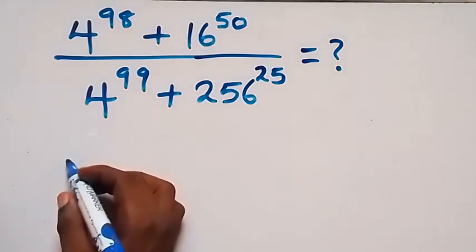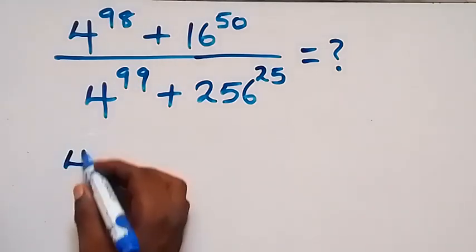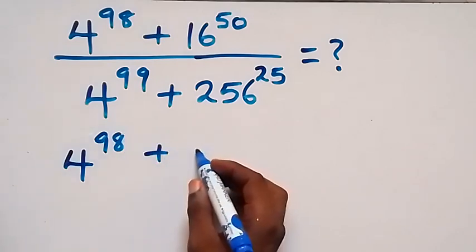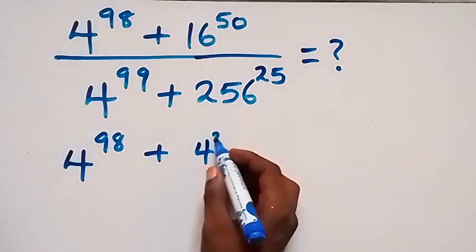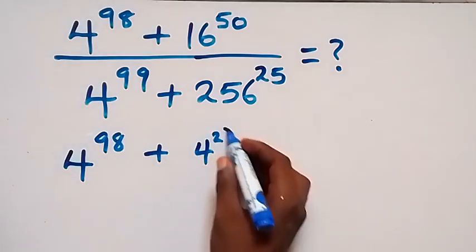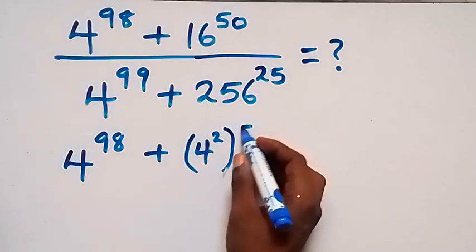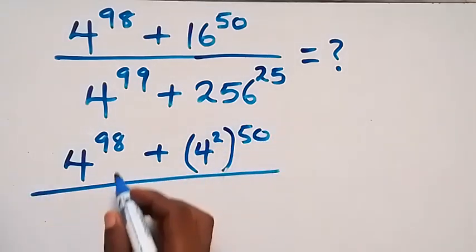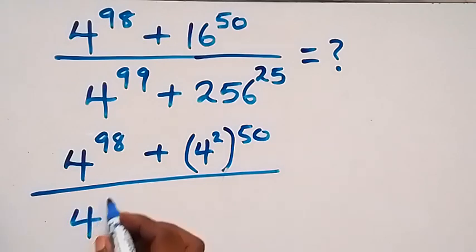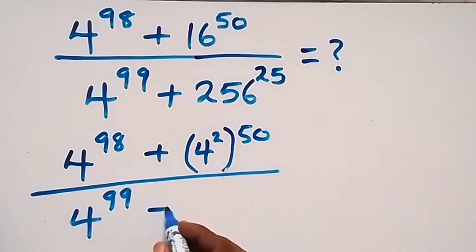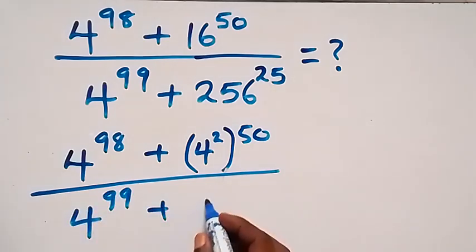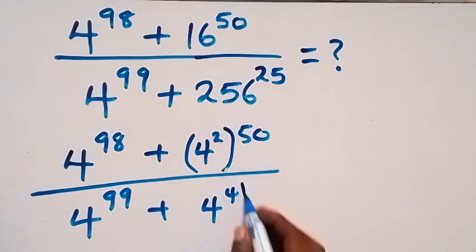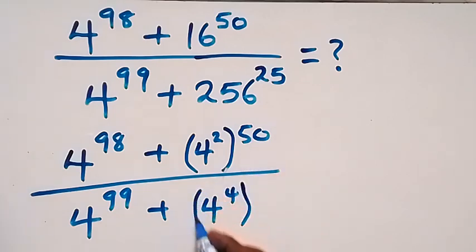Let's rewrite this as 4 raised to power 98, plus 4 squared — the same thing as 16 — raised to power 50, then divided by 4 raised to power 99, plus 4 raised to power 4 — the same thing as 256 — raised to power 25.